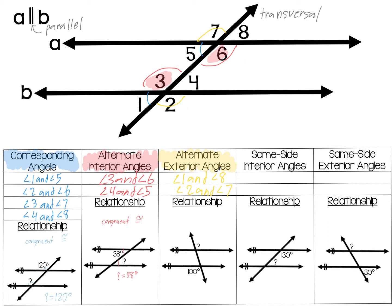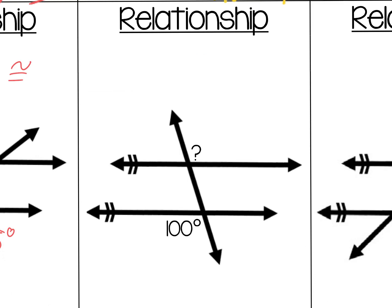So angles 2 and 7 are alternate exterior. Now let's look at an example. Notice how 100 degrees and the mystery angle are alternate exterior angles — they are both the obtuse, or bigger than 90 degree, angle formed when the transversal crosses the two parallel lines. Therefore they must be congruent angles, meaning the mystery angle is 100 degrees.